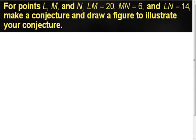Here's one with a lot of geometry. We have three different points: point L, point M, and point N. It tells us the length of segment LM is 20 units, the length of segment MN is 6 units, and the length of segment LN is 14 units. Please get in the habit of properly reading it — say 'length of segment LM,' not just 'LM equals 20,' because that's what the notation means. We want to make a conjecture and draw a figure to illustrate it.